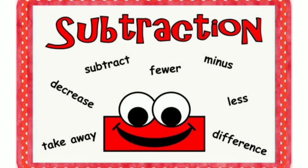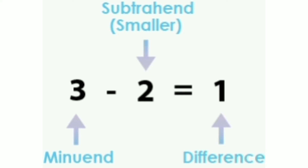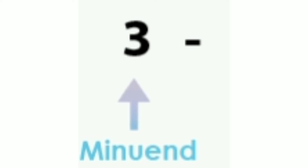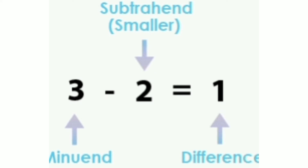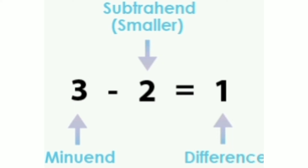Welcome students. Now we are going to see subtraction. Before we start, you must know the basic things in subtraction. Subtraction has three parts. One is the bigger number from which we subtract, which is called the minuend. The smaller number which is to be subtracted is called the subtrahend. The bigger number minus the smaller number — we get an answer, which is not called the answer, but is called the difference.